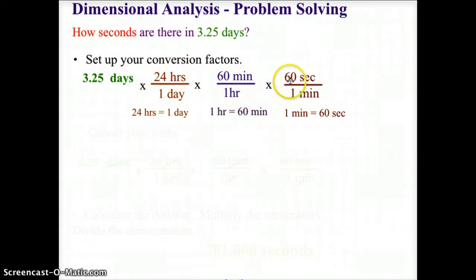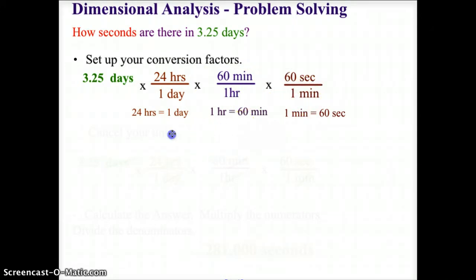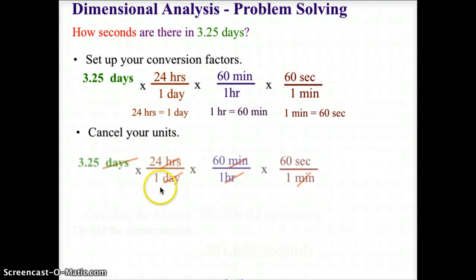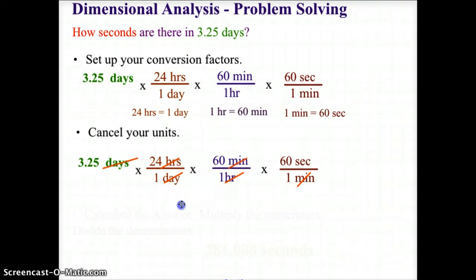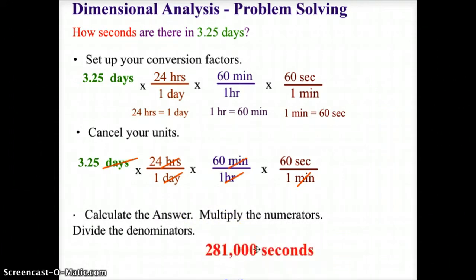Our question is about finding seconds, so our last conversion factor is 60 seconds over one minute, which allows us to cancel minutes. Canceling the units: 3.25 days cancels with day, 24 hours cancels with hour, 60 minutes cancels with one minute, leaving seconds as the only unit remaining. Multiplying all the numerators and dividing by the denominators — all denominators being one — gives us 281,000 seconds.